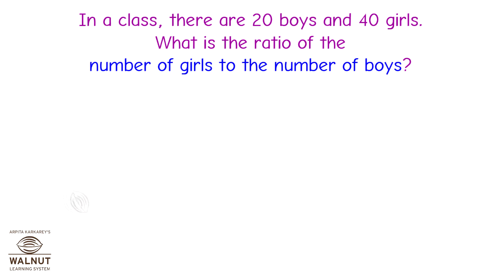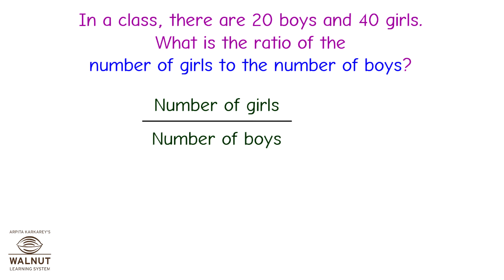In a class, there are 20 boys and 40 girls. What is the ratio of the number of girls to the number of boys? With the same values, we have to find the ratio of the number of girls to the number of boys. First, we will write the ratio to be found out as a fraction. The fraction is number of girls upon boys.